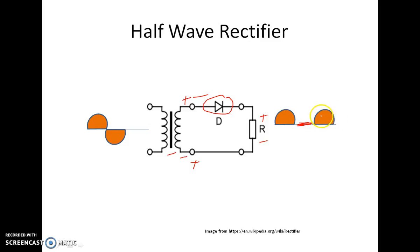In the next positive cycle again you have a replica of the input and hence the name half-wave rectifier. Observe that only in one cycle you get current through the load.